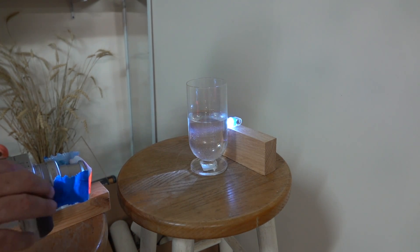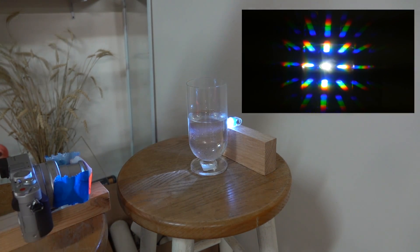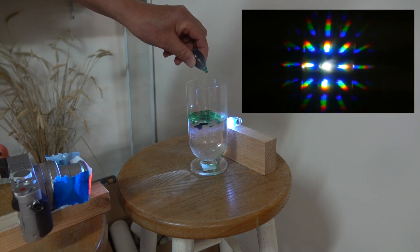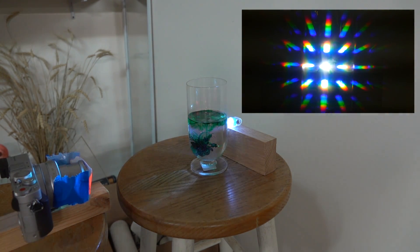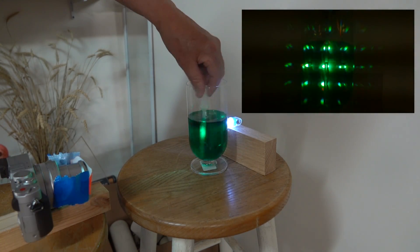Instead of separating the wavelengths, we can look at blocking them by using filters or dyes. Here we see food coloring added to water blocking out all the other wavelengths except for green.